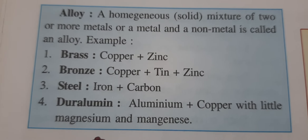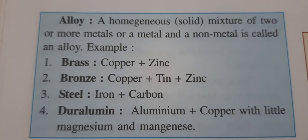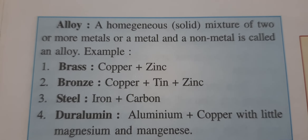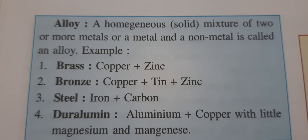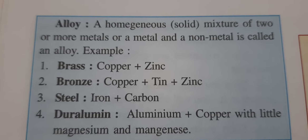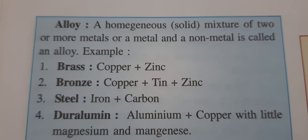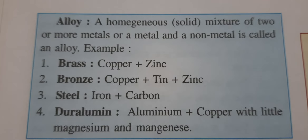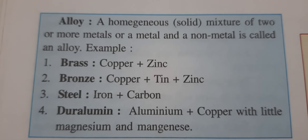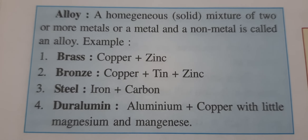For example, the first example is brass. In brass, copper and zinc are mixed together. But if you look at brass, you cannot separate these two things with your naked eyes.